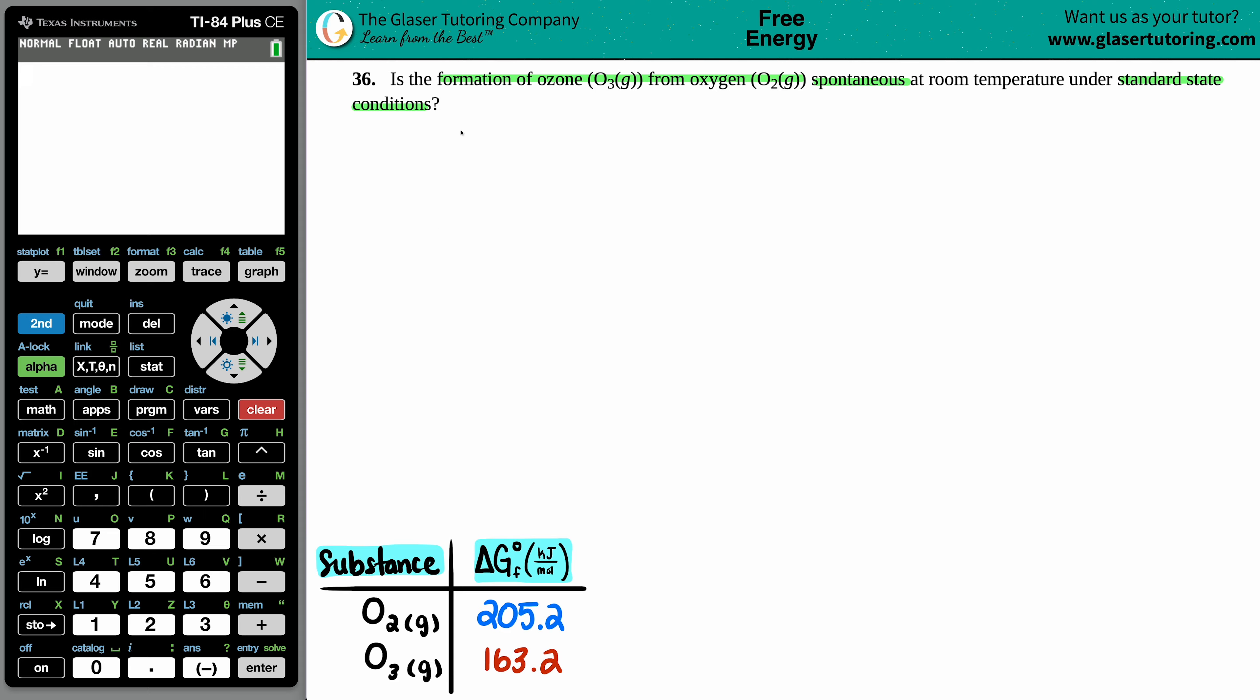Okay, so looks like they're describing a type of equation here, right? We're forming ozone from oxygen. So let's just write out that equation.